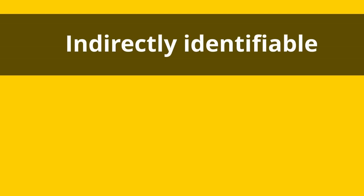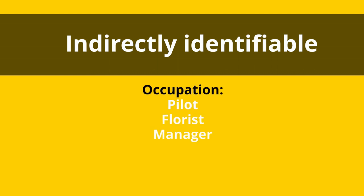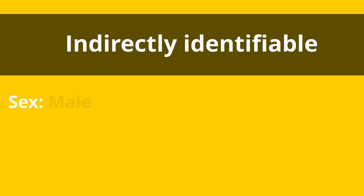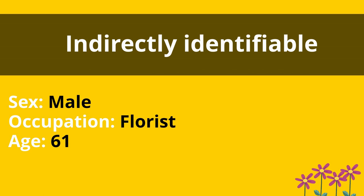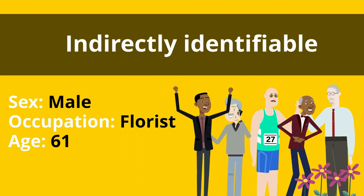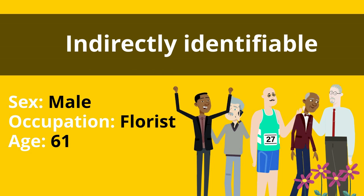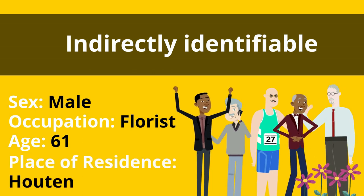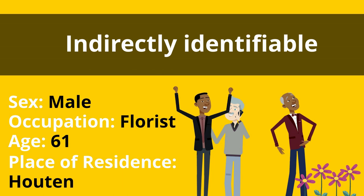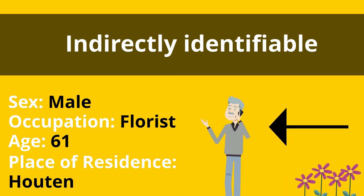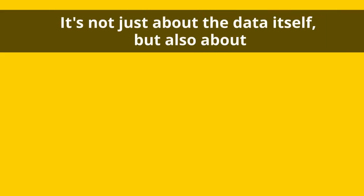However, it may also be possible to identify someone without these direct identifiers. For example, occupation may not seem like an identifiable piece of information until you include a unique occupation that only one person can have, like rector magnificus at Utrecht University. Another example: if you collect information about sex, occupation, and age, by themselves these may not lead to an individual person, but when you combine them with, for example, place of residence, the combination of variables may lead to an individual person.